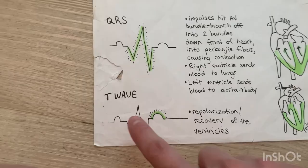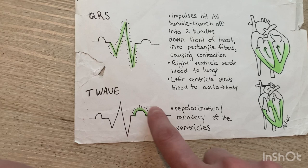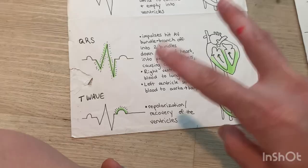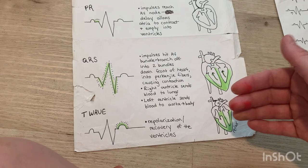The T-wave at the end is basically the recovery of the ventricles to reset their electrical potential back to normal. This is very complicated, but if you are interested it is really fascinating. You can go to YouTube and search 'cardiac action potential.'